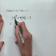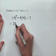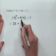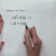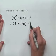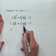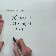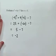Negative 5 squared means negative 5 times negative 5, which will be a positive 25. We're going to add to that 4 times negative 5, which would be negative 20, and then subtract 7. 25 plus negative 20 is going to be 5. 5 minus 7 gives us a result of negative 2.